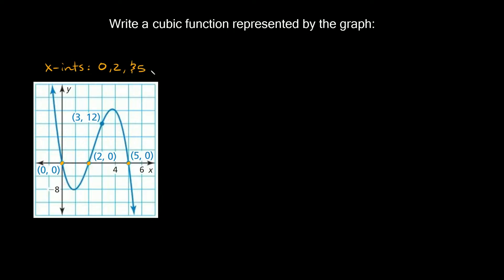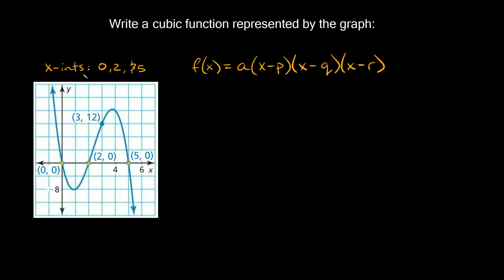Since we know the x-intercepts we can use the intercept form of a function to write out our function. So it's going to be f(x) = a times (x minus p) times (x minus q) times (x minus r). Since we have three x-intercepts that's why we need three sets of parentheses, and that's normally going to be the case with cubic functions.